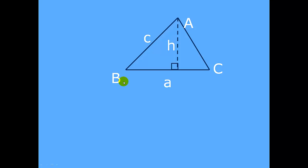If we want to find the area of that triangle, you'll recall from early geometry that the area of any triangle is equal to one-half times the base times the height. To create that base and height, we're going to have to draw an altitude from one of the vertices to an opposite side. Let's pick vertex A and draw an altitude H perpendicular to the opposite side. You can draw an altitude to any of the opposite sides, but we're just going to pick this one for this example.